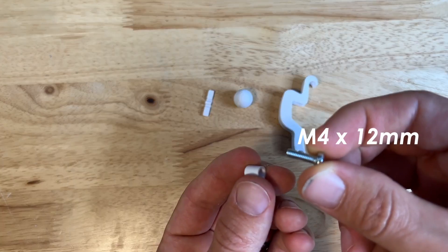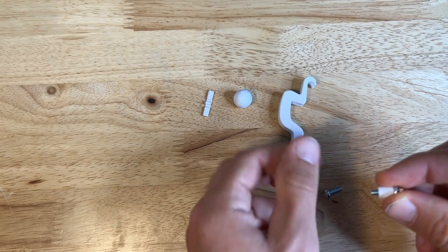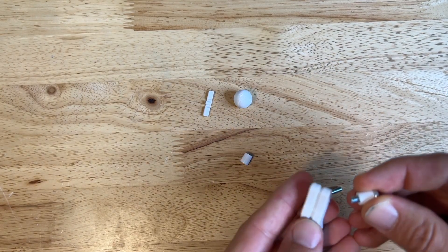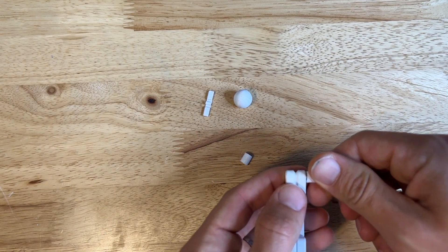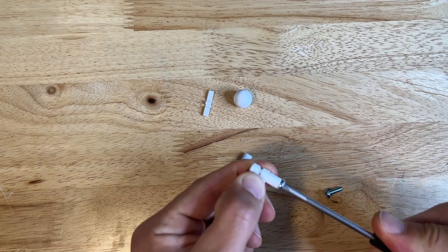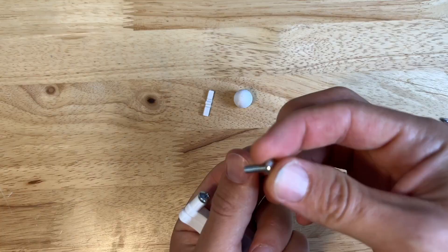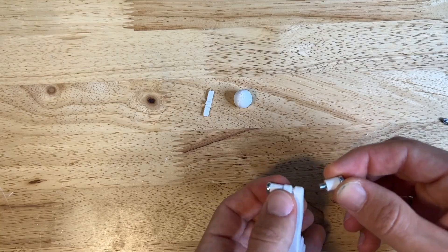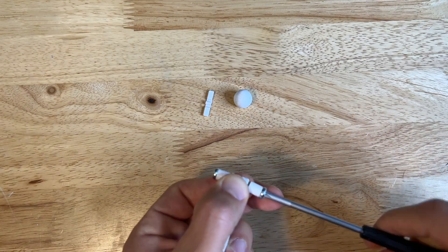All right, let's assemble Bob. Start with an M4 by 12 millimeter screw that goes through one of the spacers and that screws into the hole in the side of Bob. Then repeat that on the other side. M4 by 12 millimeter screw, spacer, screw it all the way in.